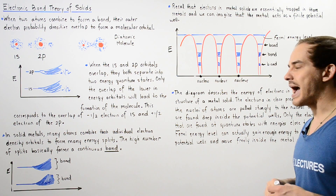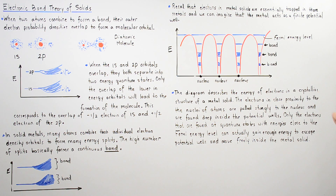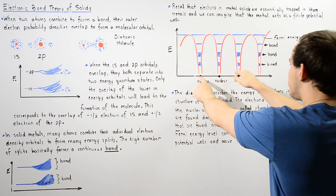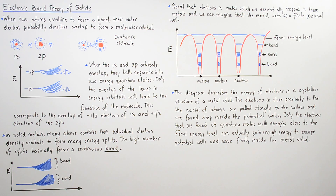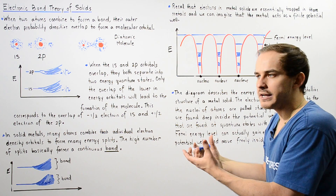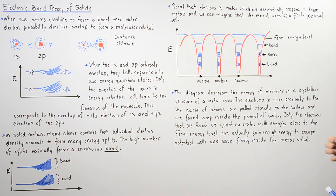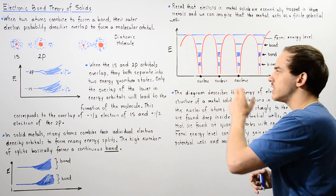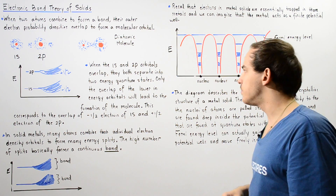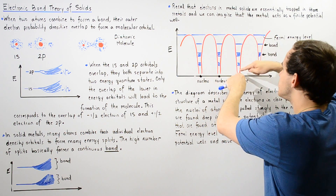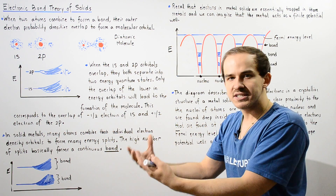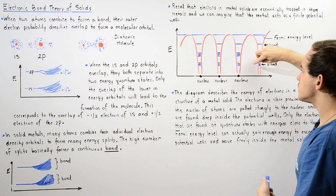The diagram describes the energy of electrons in the crystalline structure — the crystal lattice — of a metal solid. The nuclei are each separated by the same separation distance. Electrons found in close proximity to the nucleus are pulled more strongly; they experience the strongest electrostatic force, are pulled very close to the nucleus, have low energy, and are most stable. These electrons are found very deep inside our finite potential wells and correspond to the lowest band regions.